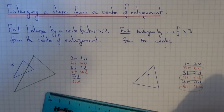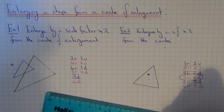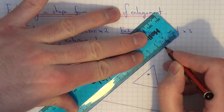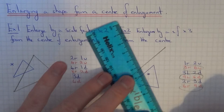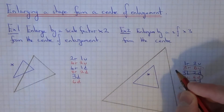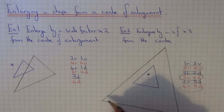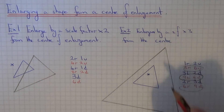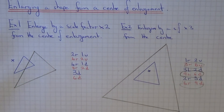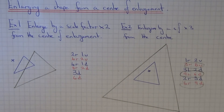So again, finally just join all your corners up. There you go — you can see it's the same as the original shape but all the side lengths are three times as big. The main thing to remember is to count the distances from the centre to each corner. If you remember that, you shouldn't go wrong with these enlargements.